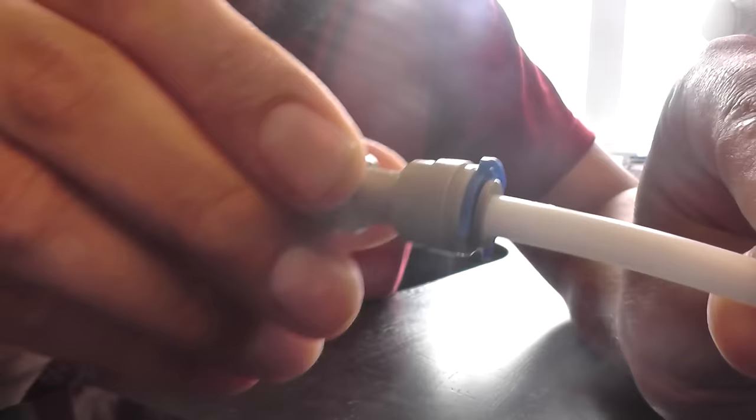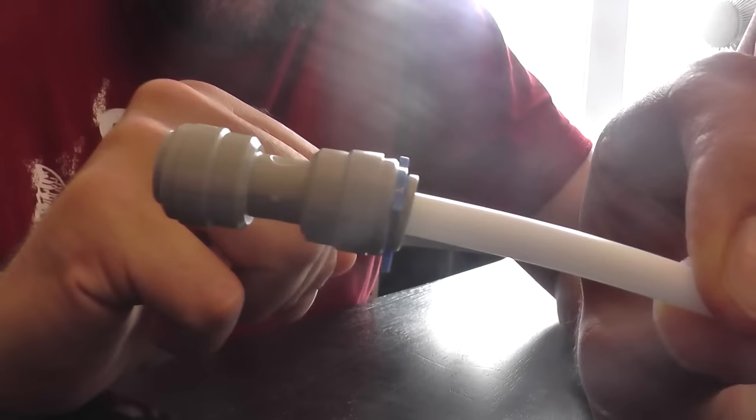And that stops the ring from obviously being pushed down to enable the tubing to come out. So that is a nice secure push fit connection that will never come out or leak.